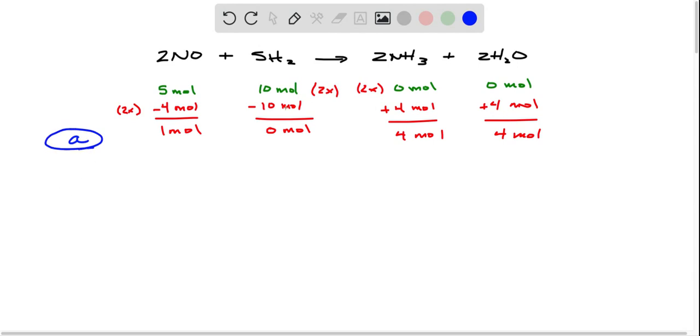So without doing any fancy calculations here, we just said if we had 10 moles of H2 to start with, that's twice the 5 that we have in our system. So we can really think of this as 4, 10, 4, 4 as our coefficients. And then what did we do to the left side? We used them. What did we do to the right side? We made them.